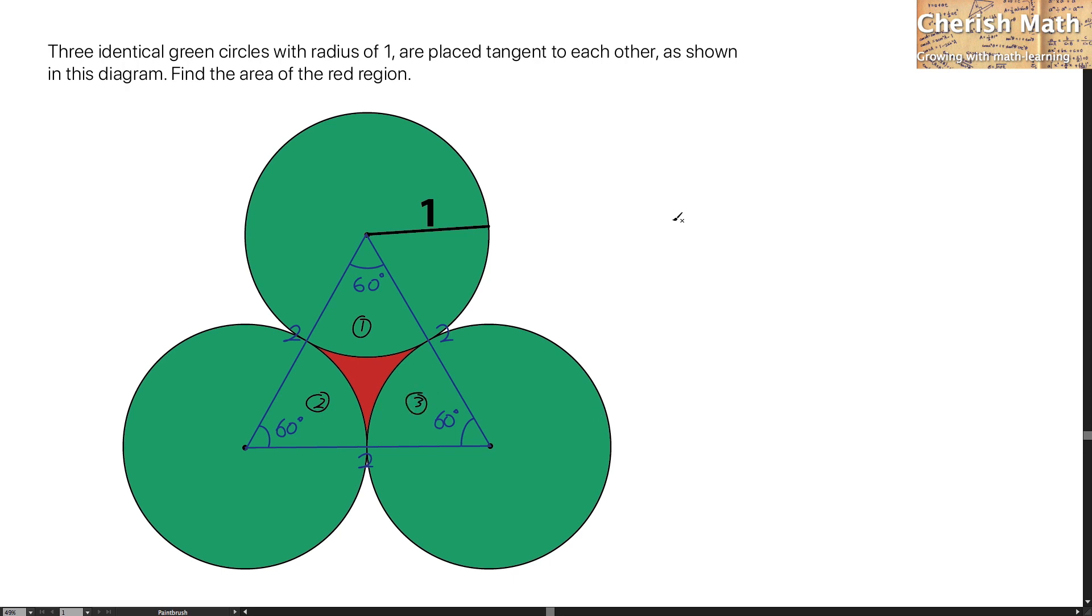The method that I'm going to use is by using the area of the entire triangle, and take away the sum of the area of the 3 sectors.